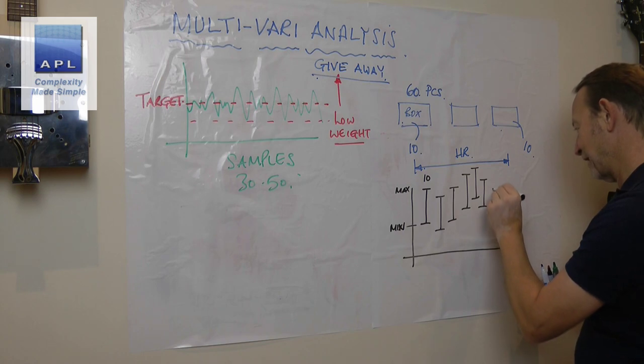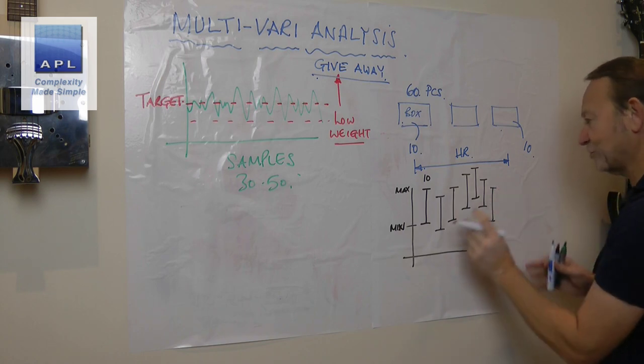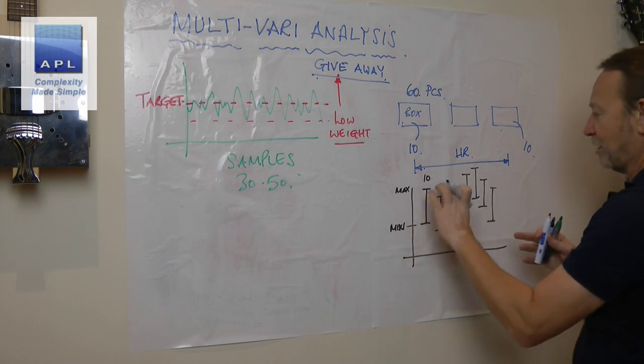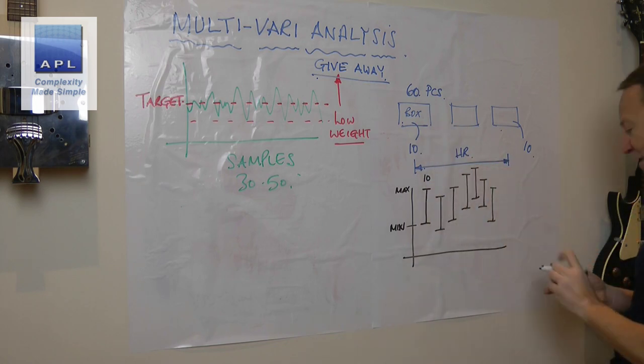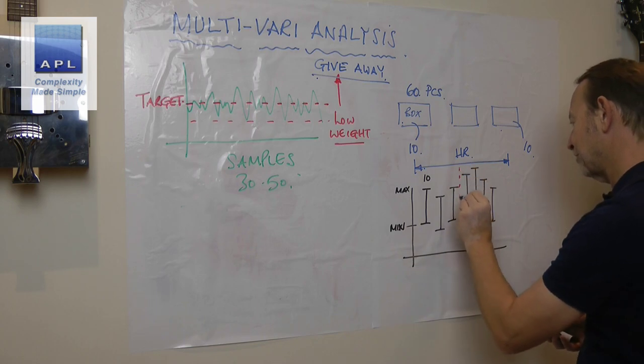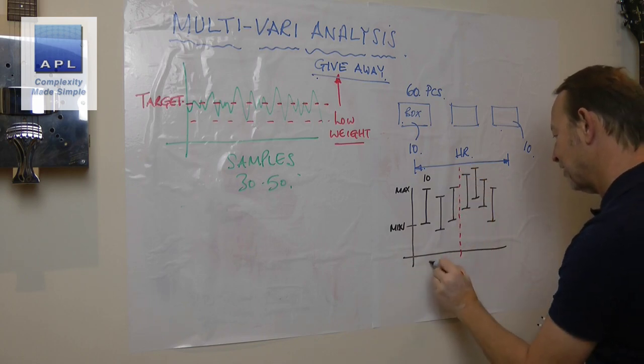The top of the line is the maximum weight I saw, the bottom of the line is the minimum weight I saw. Then the next group is an hour later, then the next group is an hour later. Then maybe we went into the next day, we went into the next day.